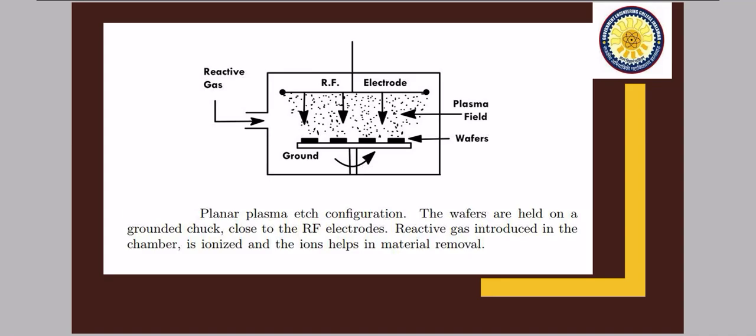This is the diagram of your planar plasma etch configuration. The wafers are held on the ground chuck close to the RF electrodes. Reactive gas introduced in the chamber is ionized. And the ions help in material removal.